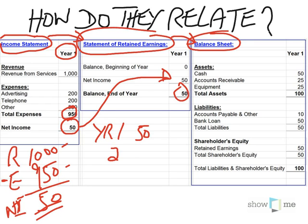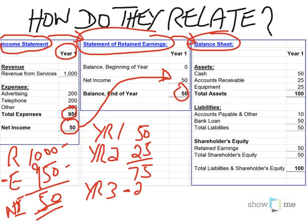Let's assume we're at the end of year two and we had another net income of $25. So at the end of year two, our retained earnings would be $75. Now let's say in year three we had a net loss of $25, so at the end of year three our retained earnings would be $50. Retained earnings are just an accumulation of profits and losses from day one of the business to whatever point in time you're at. I just wanted to show you what happens to retained earnings when future net incomes and losses are factored in.